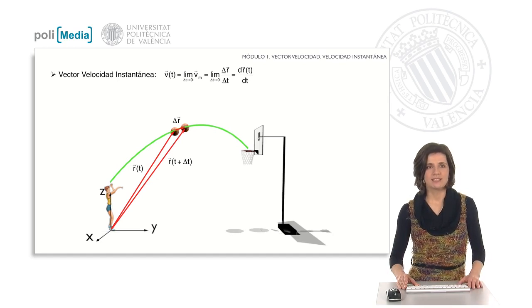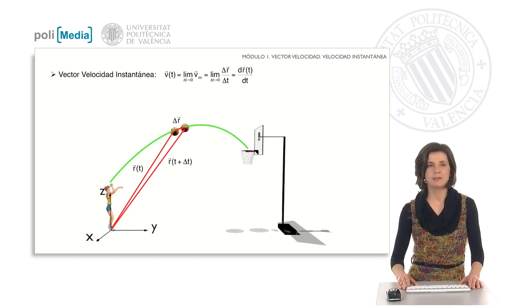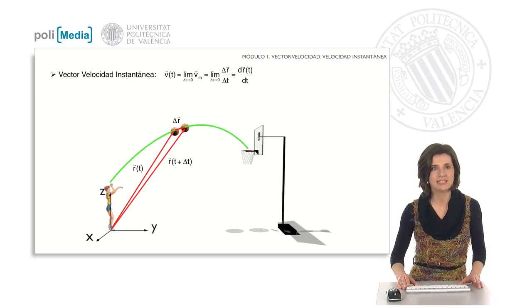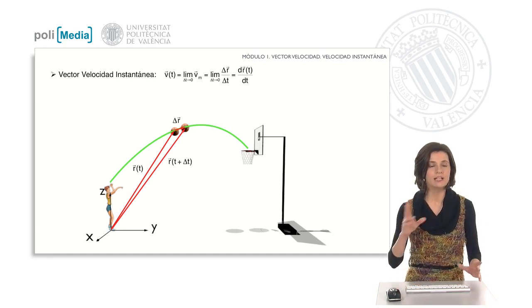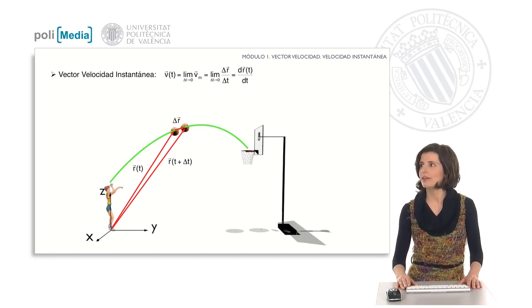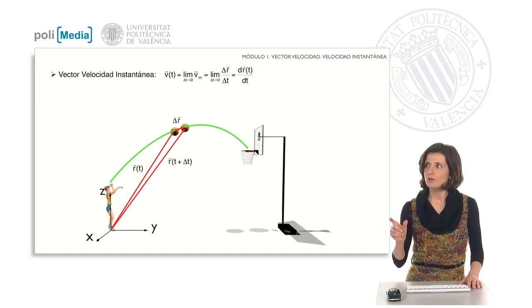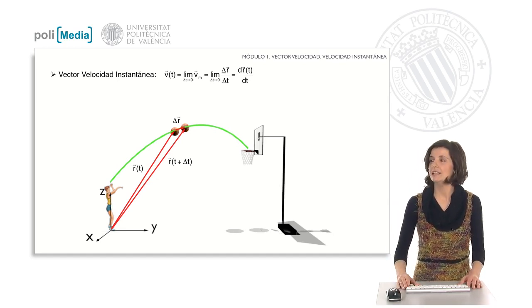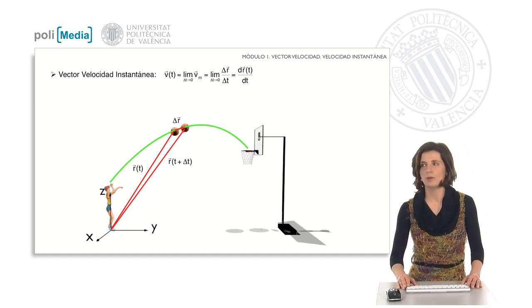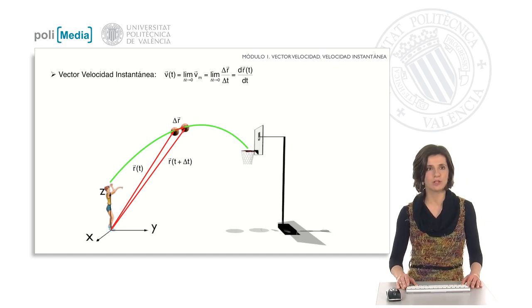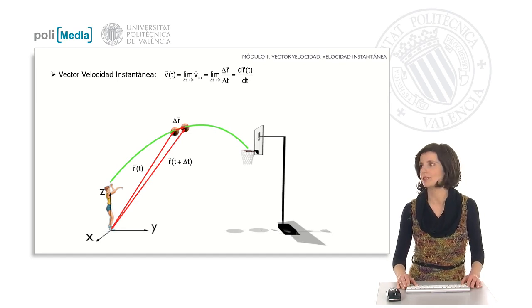The other velocity vector that exists is the instantaneous velocity vector. This is evaluated at a specific instant t. It is a concept similar to average velocity, but the time interval is infinitely small — that is, it is the limit when Δt tends to zero of the average velocity vector. This is the derivative of the position vector with respect to time.